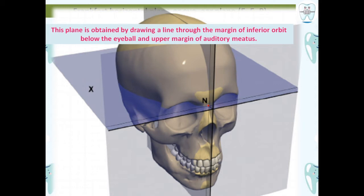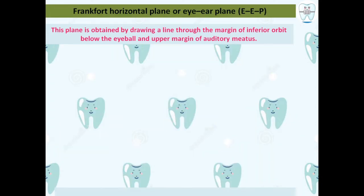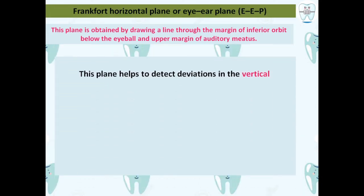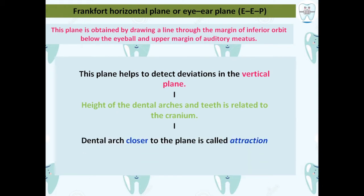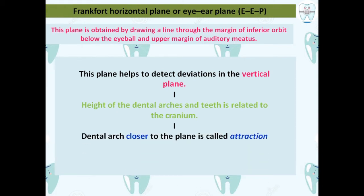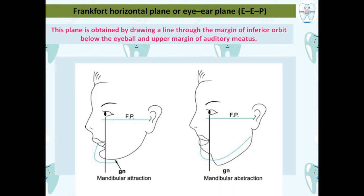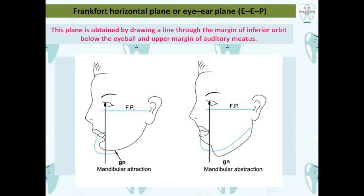The FH plane helps detect deviations in the vertical plane. The height of the dental arches and teeth is related to the cranium using this plane. If the dental arch is closer to the FH plane, it is called attraction; if it is farther away, it is called abstraction. So in the first figure, the dental arch closer to the FH plane shows mandibular attraction, and in the second it is farther away, showing mandibular abstraction.